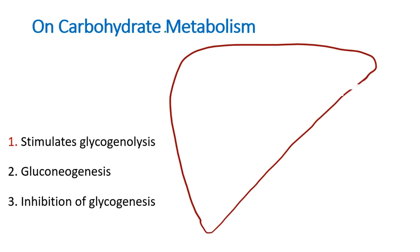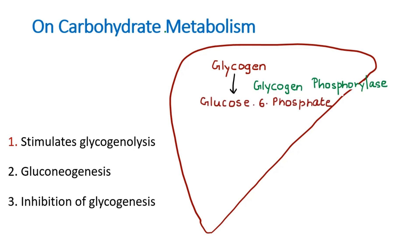In the liver, glucose is stored as glycogen. Glucagon stimulates the enzyme glycogen phosphorylase, which converts this glycogen to glucose-6-phosphate. It is then easier to produce glucose from this glucose-6-phosphate. This is the first action of glucagon: stimulation of glycogenolysis.